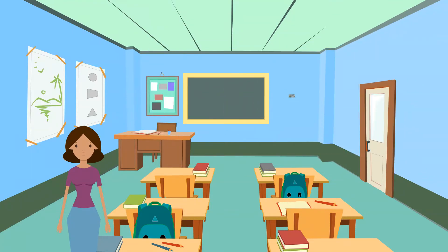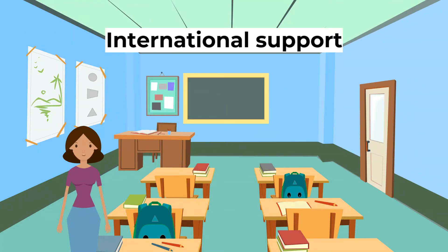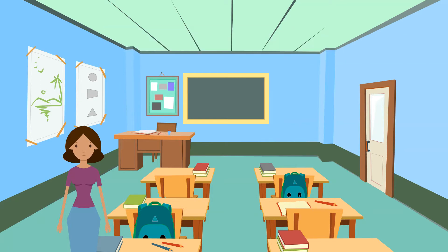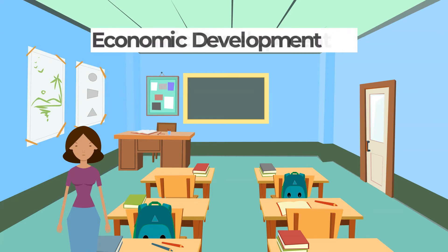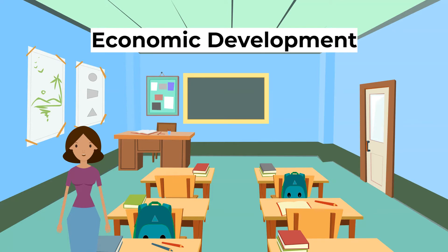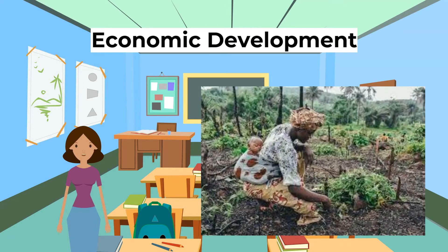Malawi receives a great deal of international support, including from the UK, the World Bank, and NGOs such as Christian Aid and Water Aid. These aid agencies provide financial support for the government to invest in development, as well as providing short-term aid during food shortages.